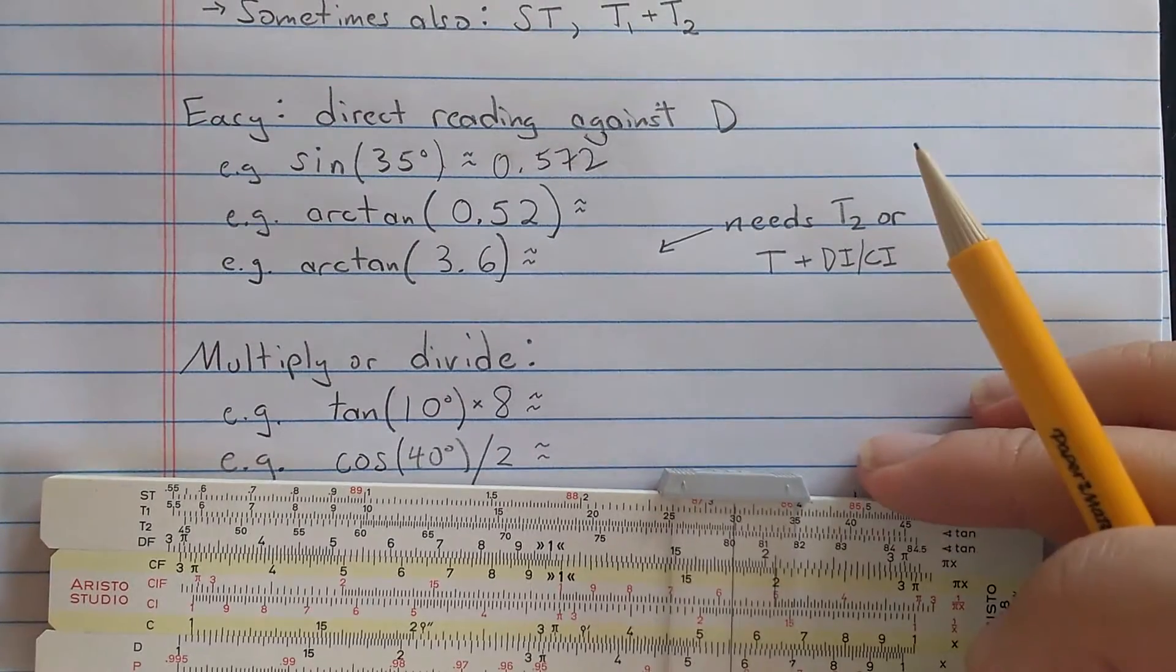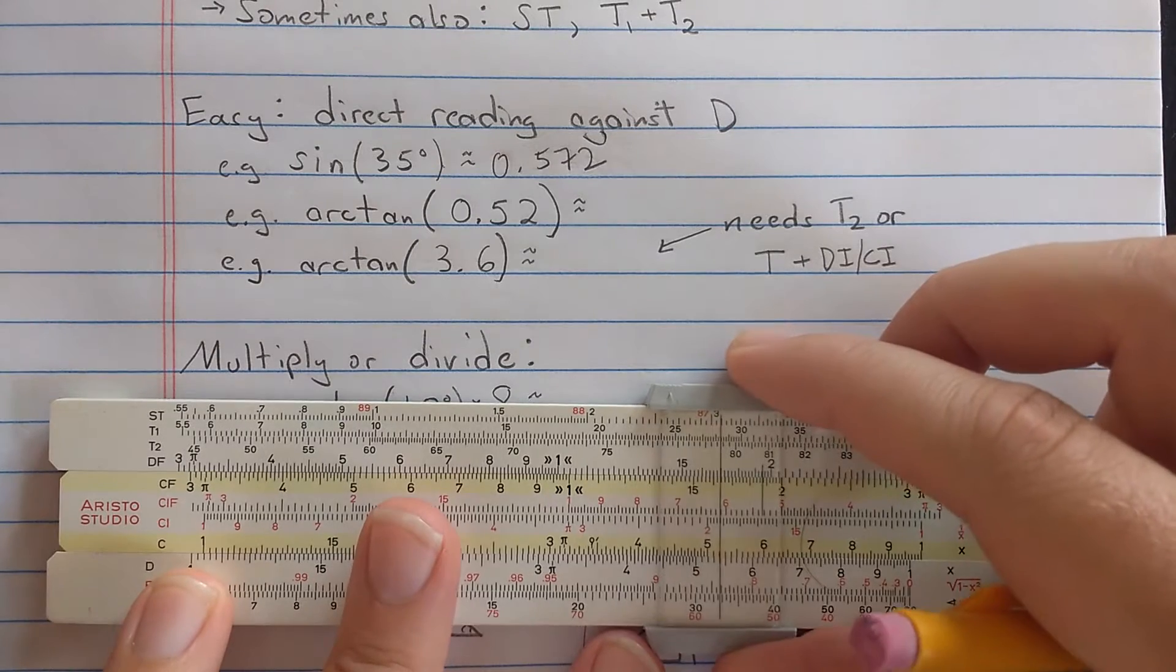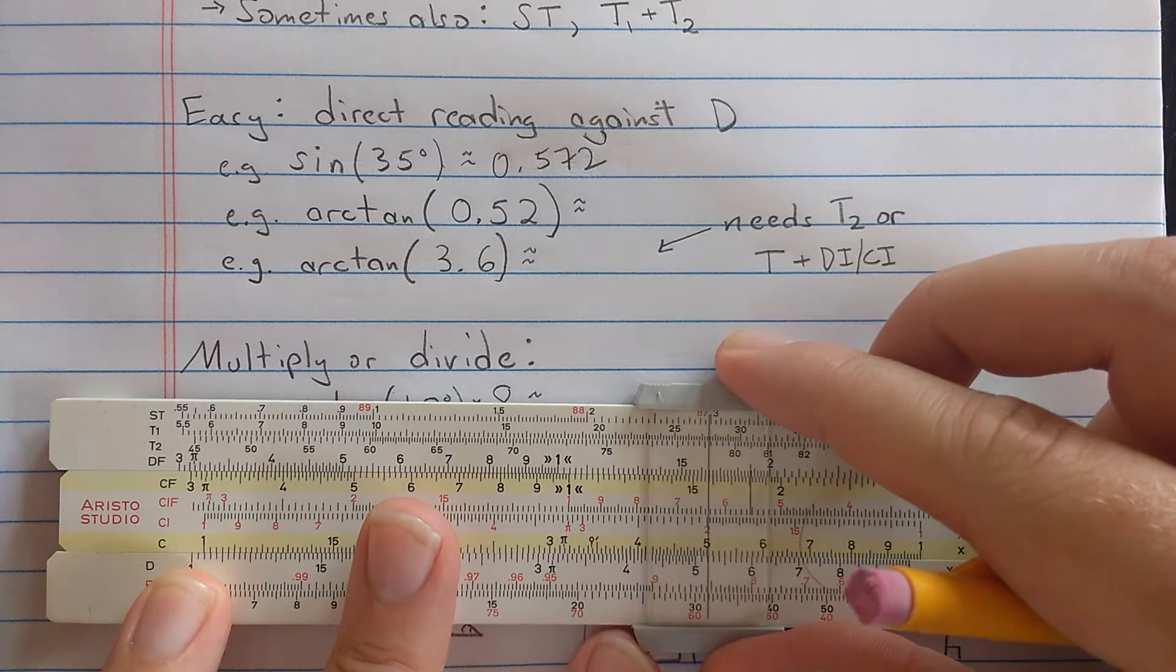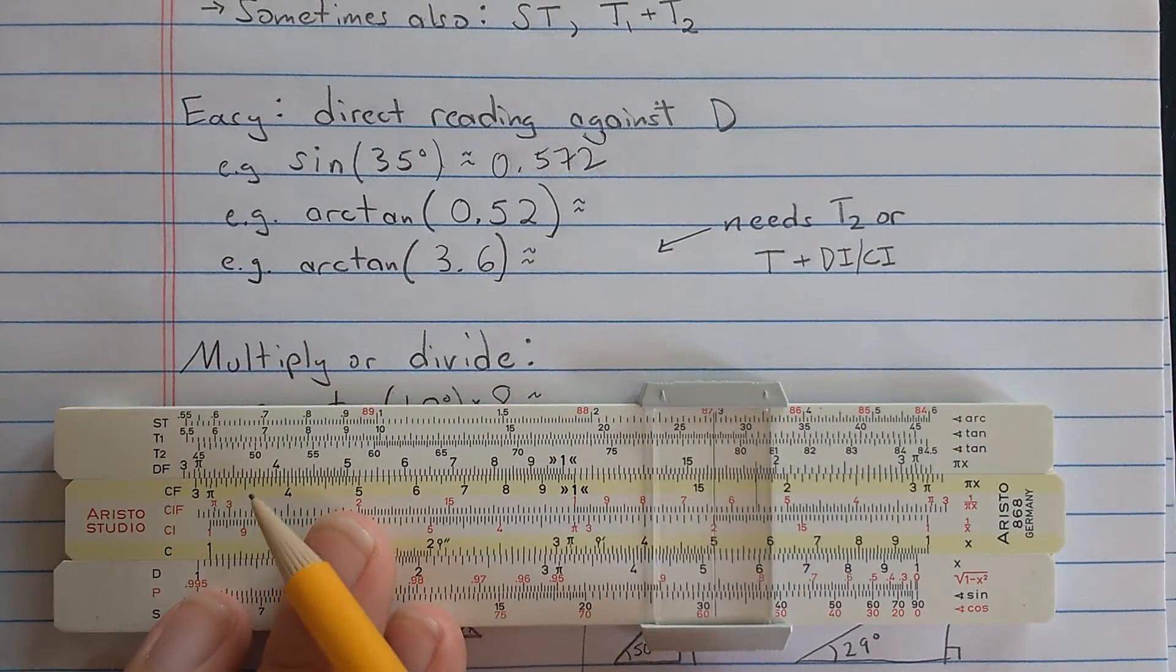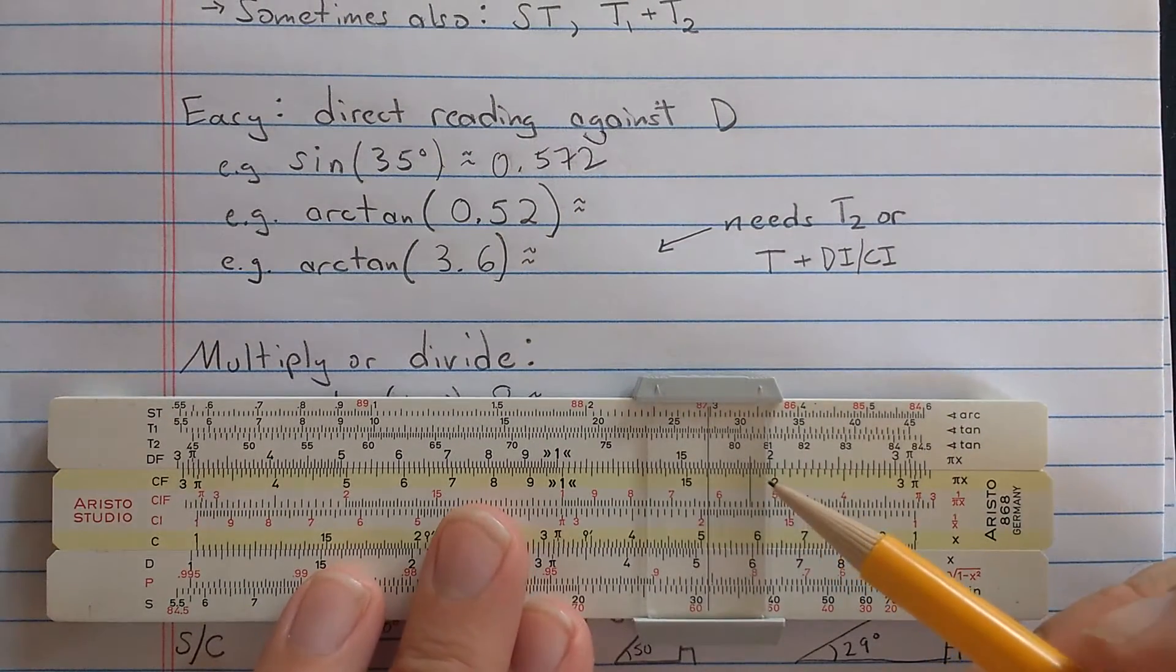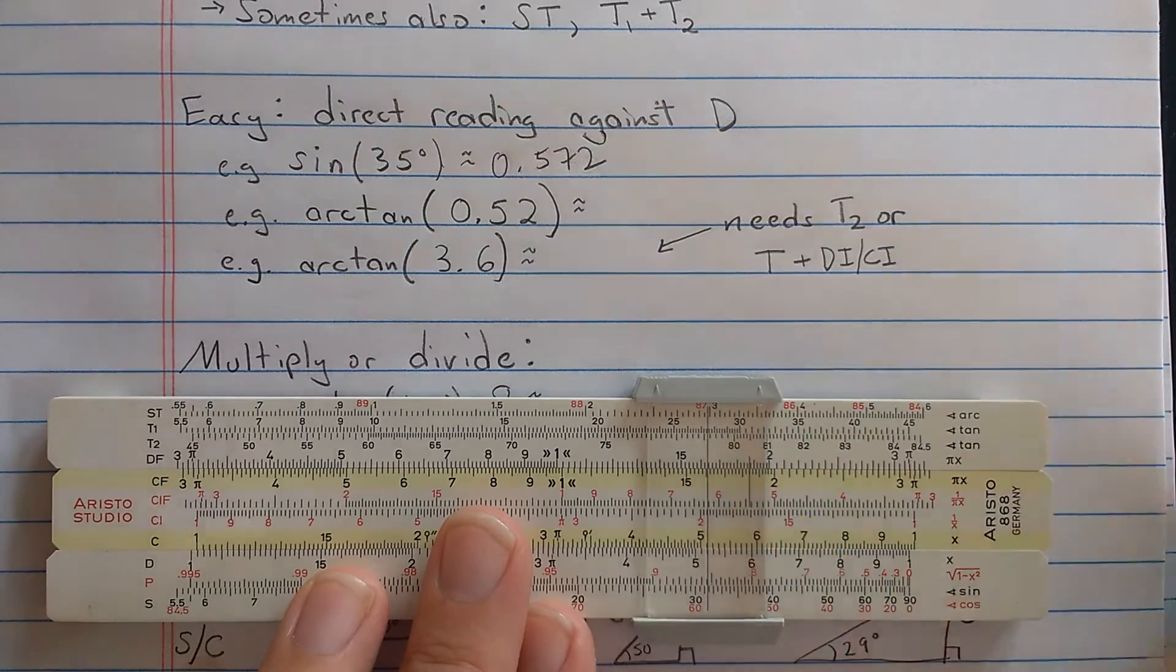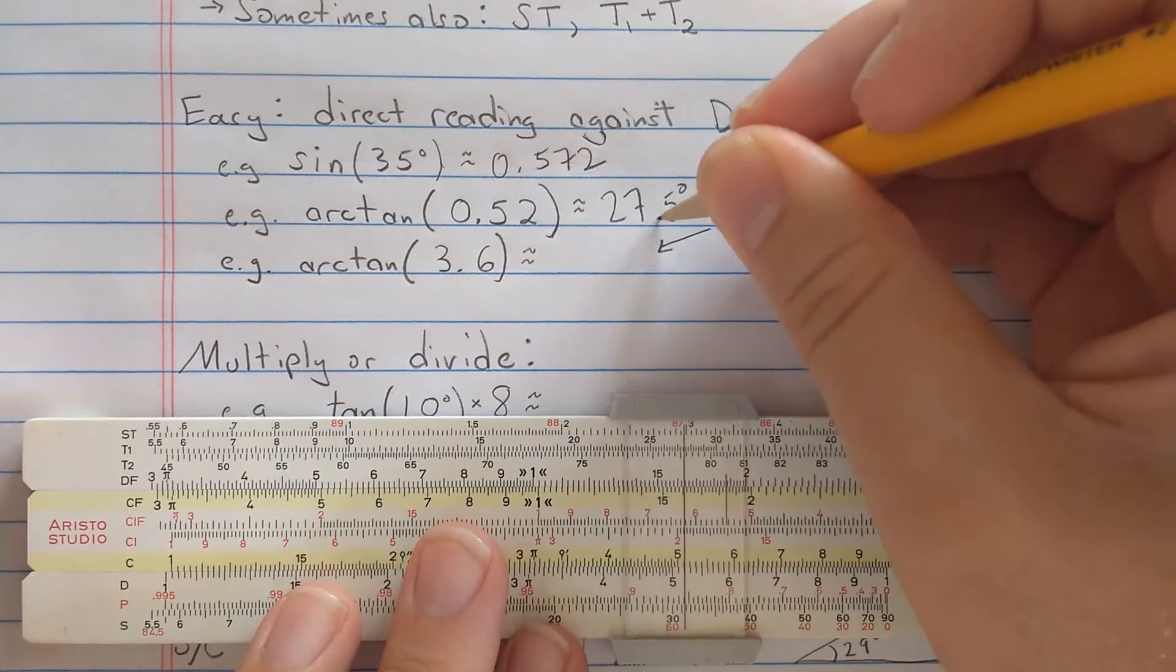You can read in reverse. So let's compute some arctangents. If I find 5.2 on the D scale, then I'm going to read up the tangent 1, T1, or the T scale if you don't have two tangent scales. And here I read about 25, 6, 7, 27.5, let's say.